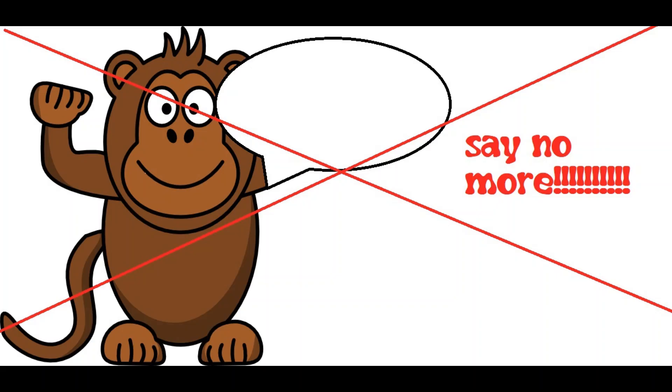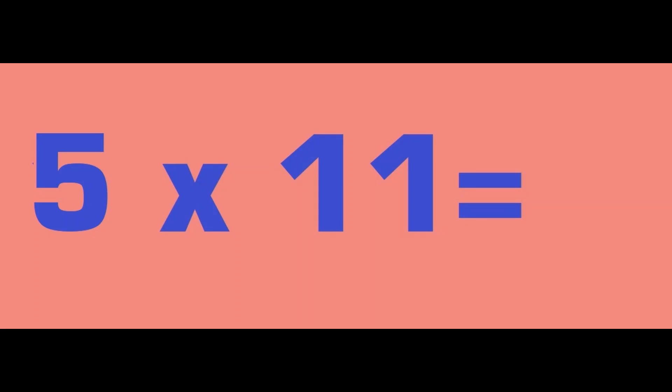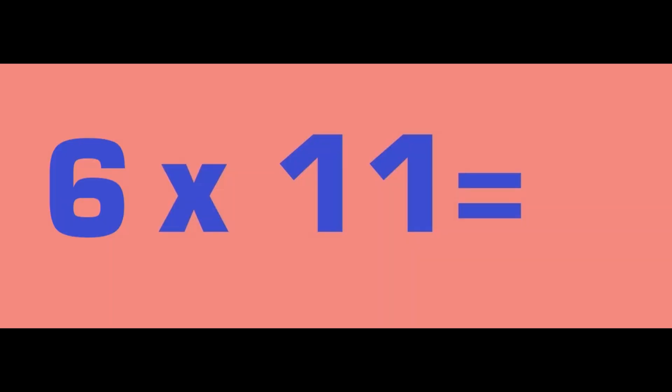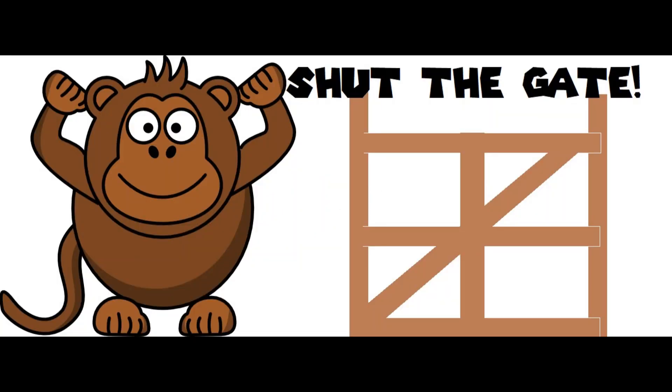11 times table. 5 times 11 is 55. 6 times 11 is 66. 7 times 11 is 77. 8 times 11 is 88. Shut the gates — 11 times table!